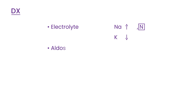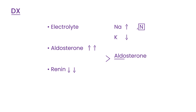Another thing you measure is aldosterone, which will be high. You also measure renin, which will be low, because the kidney senses high blood pressure and that results in low renin levels. Sometimes you can calculate a ratio of aldosterone to renin level. And if you really need to get to the bottom of things, you do imaging to detect a tumor.